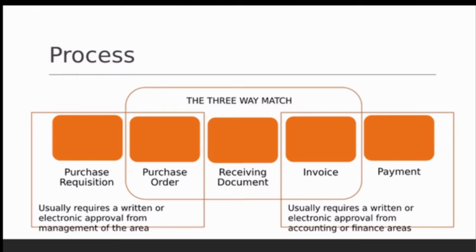The three-way match means there are three pieces that allow a payment to happen. You've got the purchase order, which says what you're going to order and what you expected to pay; the receiving document, which should correlate to the purchase order confirming you received the items ordered; and finally the invoice for those items, which should match the price and quantity from the purchase order.